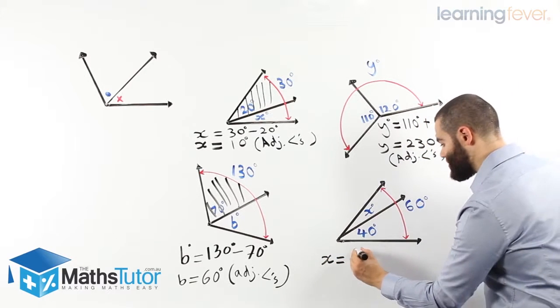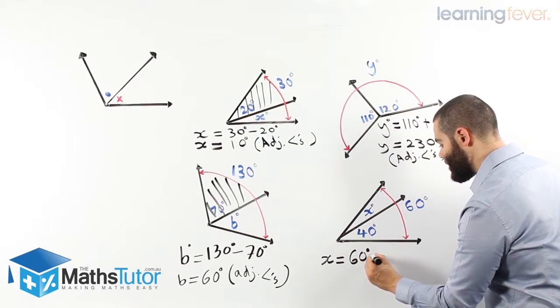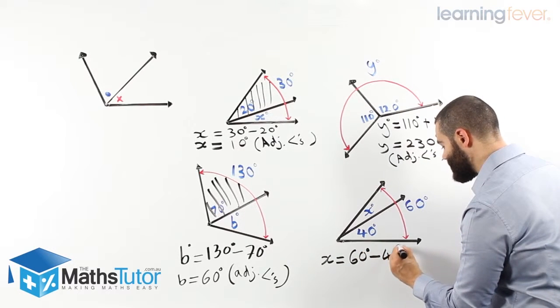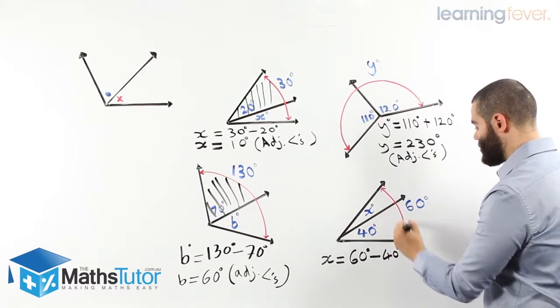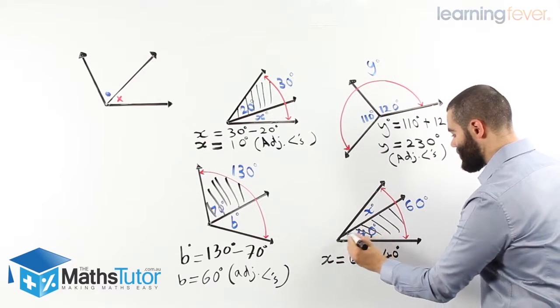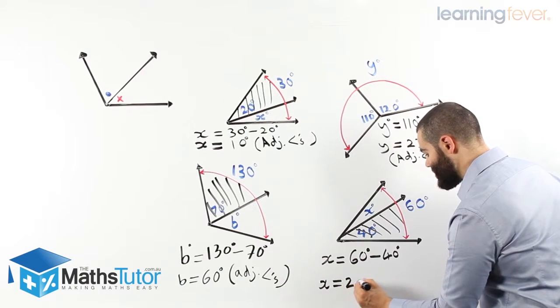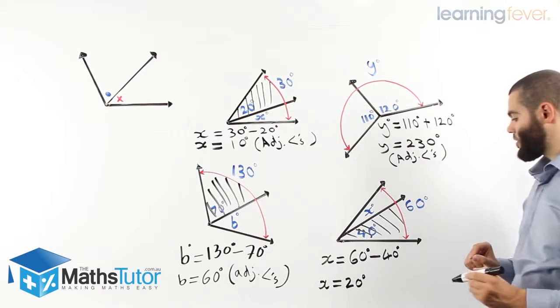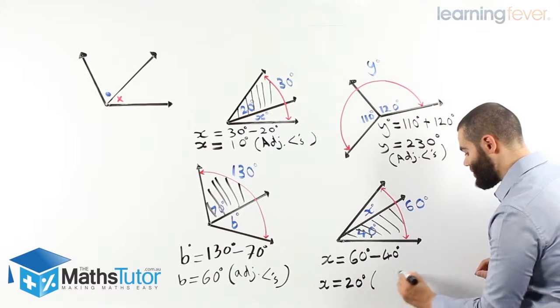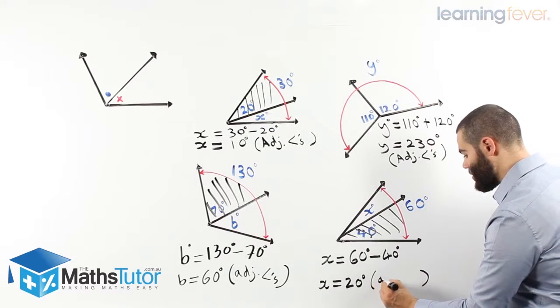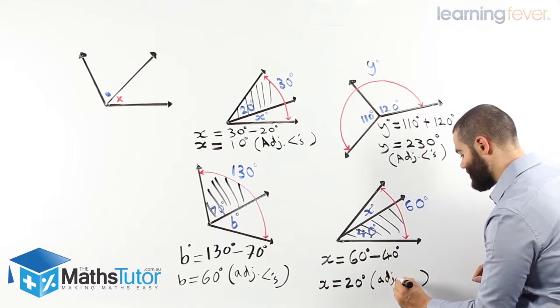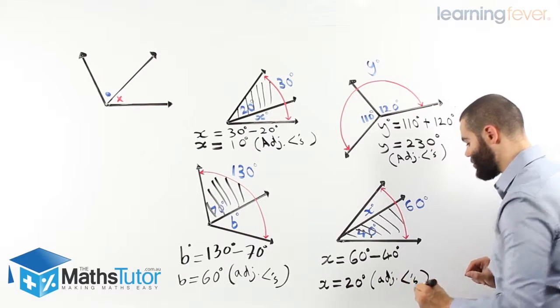X is 60 degrees, which is the total, minus the 40 degrees. So the total, take away the 40, X is 20 degrees. And of course, our reason, very, very important. Adjacent angles.